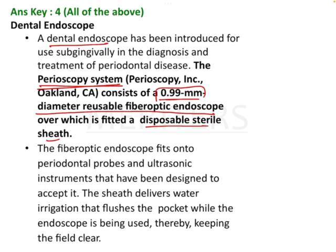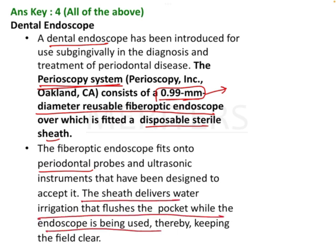Remember: the diameter of the tip is 0.9 mm. It fits into the periodontal pocket and is designed so the pocket can accept it. The sheet delivers water irrigation that flushes the pocket while the endoscope is being used, thereby keeping the field clear. This is the mechanism of action, the size, and the uses — including exploration of the sub-gingival epithelium and furcation.